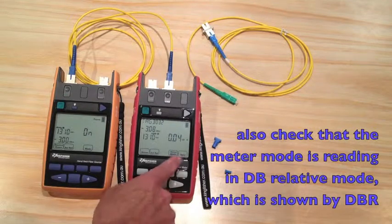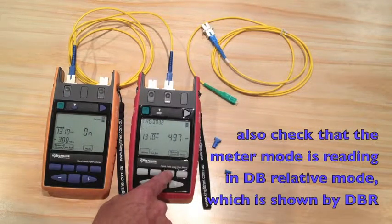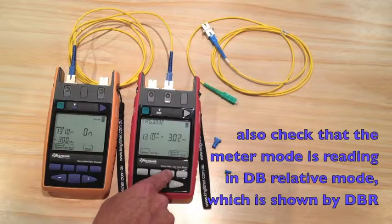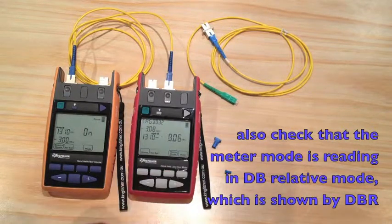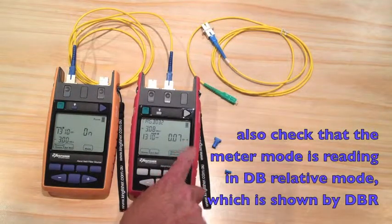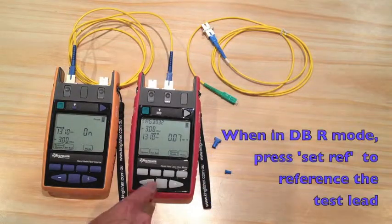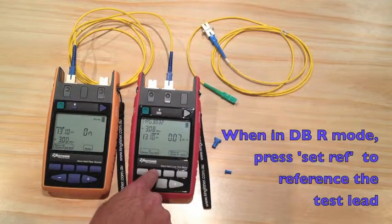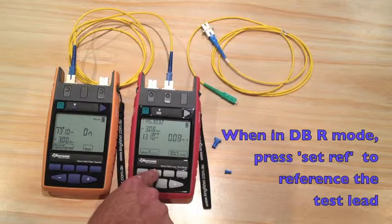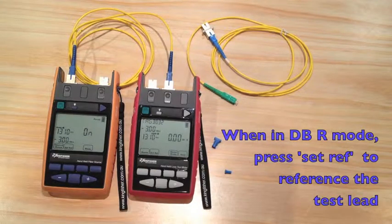Also check that the meter mode is reading in dB relative mode. Just show my dB R. When you're in dB relative mode, press set ref to zero the test lead out.